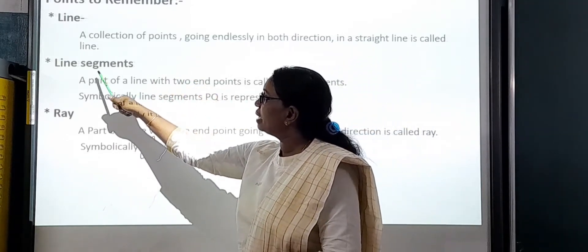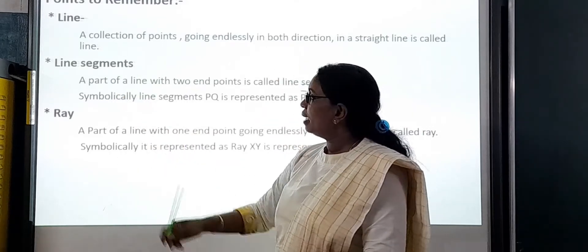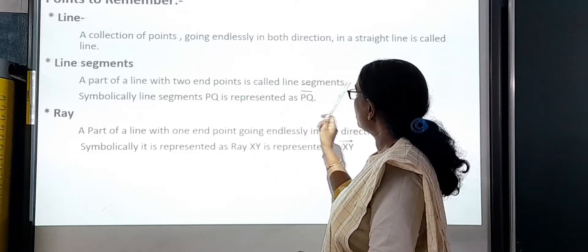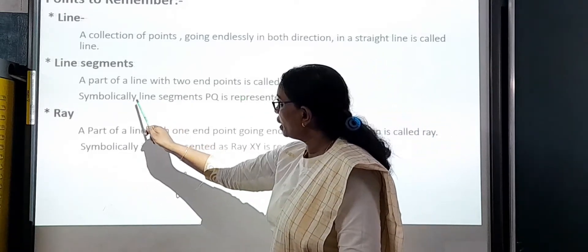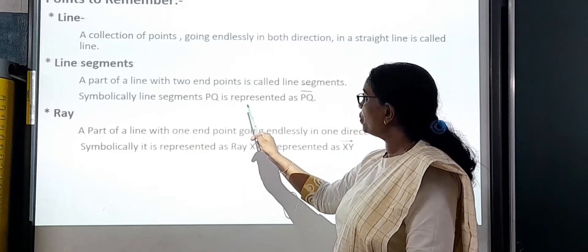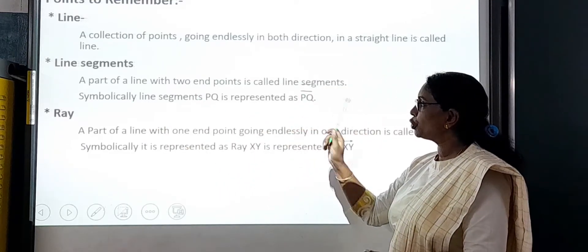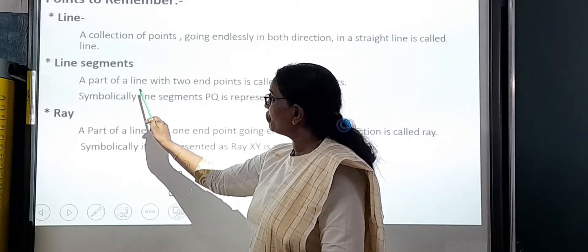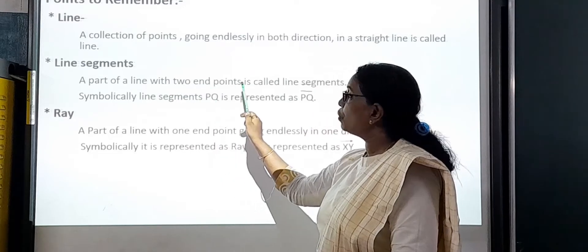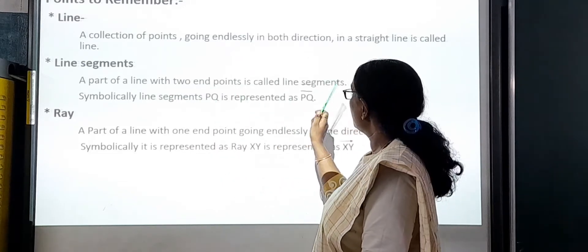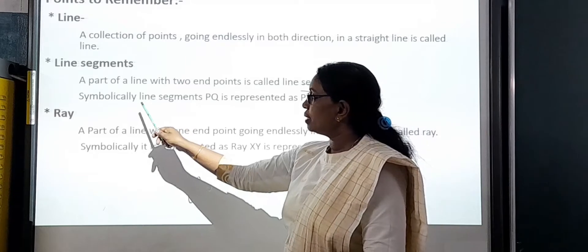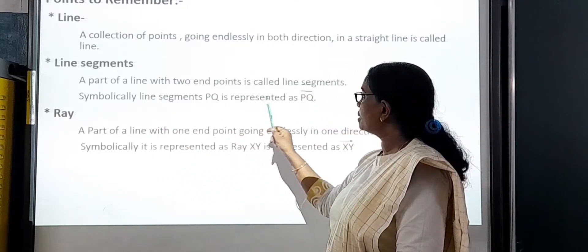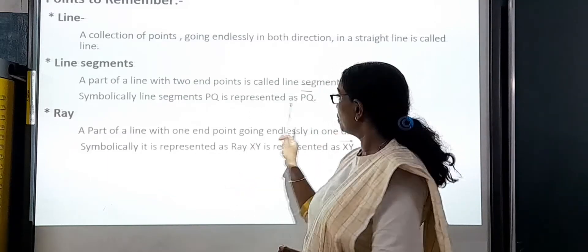Our next one is line segment. A part of a line with 2 end points is called a line segment. Symbolically, the line segment PQ is represented as PQ.